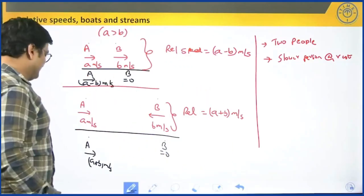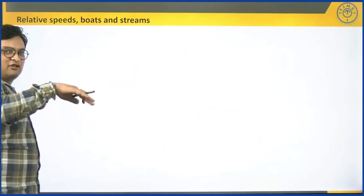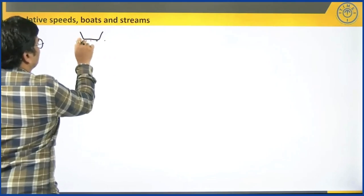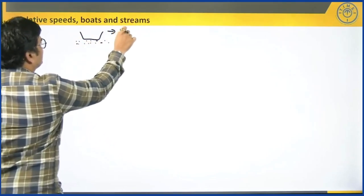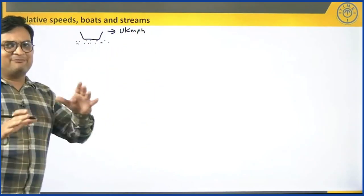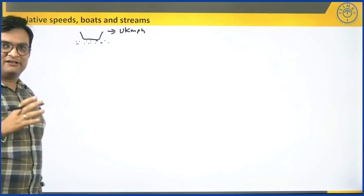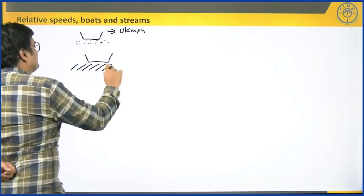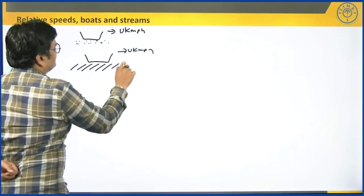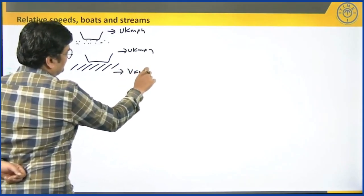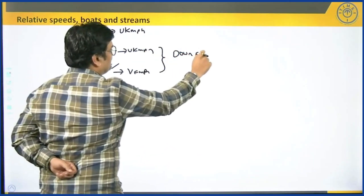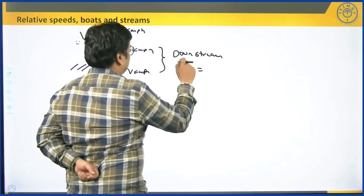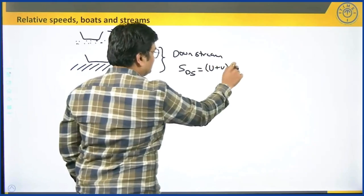Let us also cover boats and streams, because the example today will involve boats and streams too. If a boat is moving in still water at speed u kmph, the water has no impact on the boat, so its speed remains u kmph. However, if the boat is travelling in a stream, with the stream also going in the same direction at v kmph, we call this downstream movement. The speed downstream is the sum of the speeds: u plus v kmph.